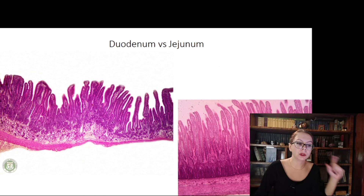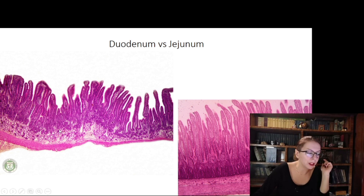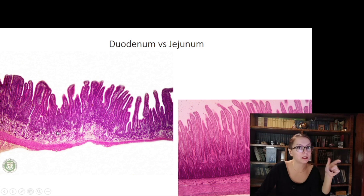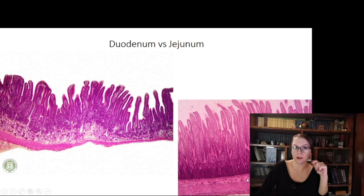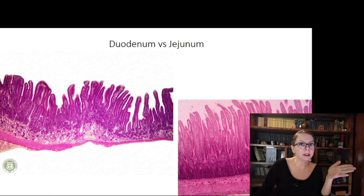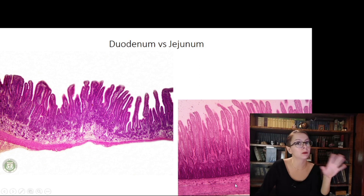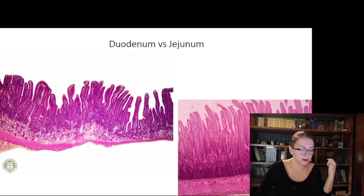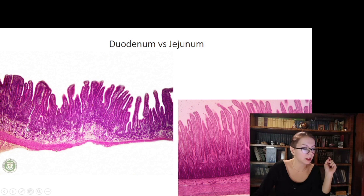The next pair — duodenum and jejunum — is very easy to confuse. However, you should remember that in the duodenum there are Brunner's glands in the submucosa, as we just discussed, and these glands are absent in the jejunum. In the duodenum there is a necessity to neutralize the acidic content coming from the stomach, while in the jejunum the pH is already balanced, so there is no need to produce mucus. Notice also that the muscularis mucosae is well distinguishable even at low magnification.